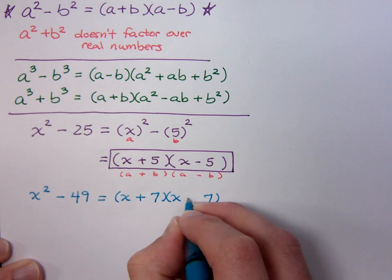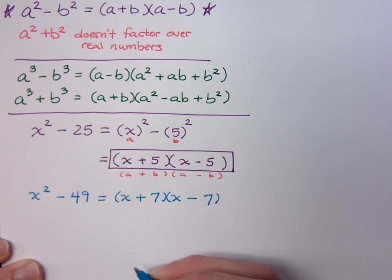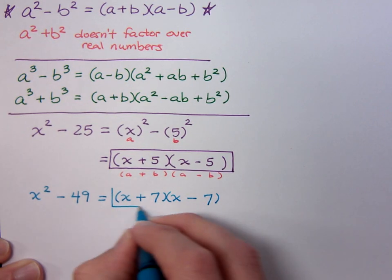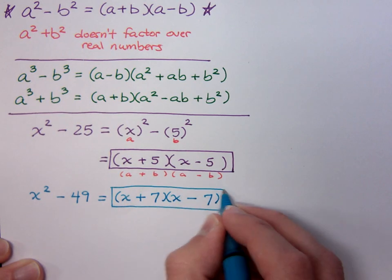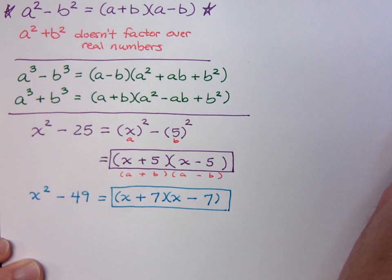So the x² breaks as x and x, 49 is the square of 7, plus, minus, and you're done. Wow, these guys are fun. As long as I know my squares, I'm going to be okay.